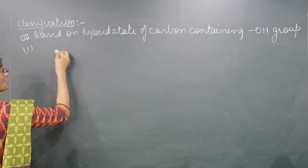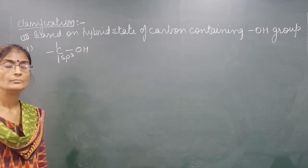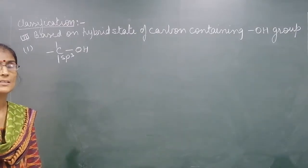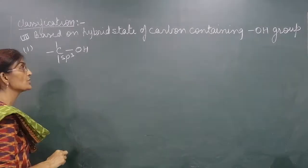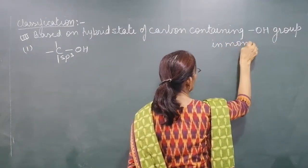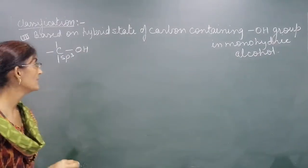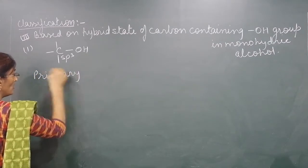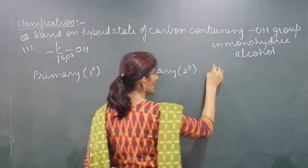If the OH group-containing carbon is SP3 hybridized, then three types of alcohol compounds are there. This is the classification of Monohydric alcohol — based on the hybrid state of the carbon containing one OH group. In Monohydric alcohol, the types are Primary, Secondary and Tertiary alcohol — also called one degree, two degree and three degree.